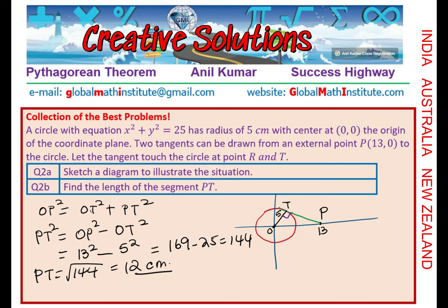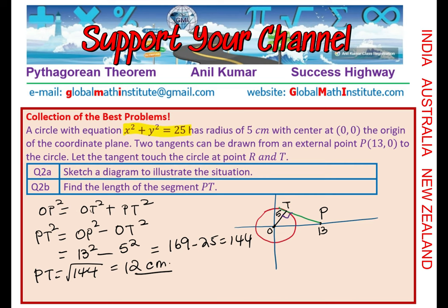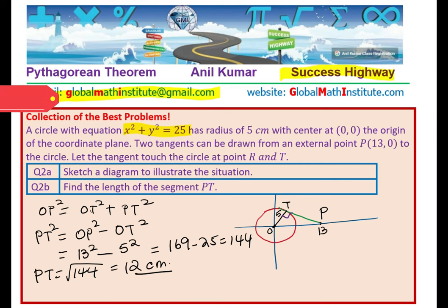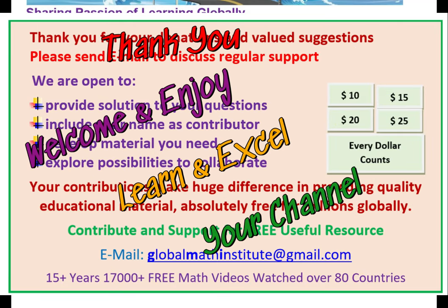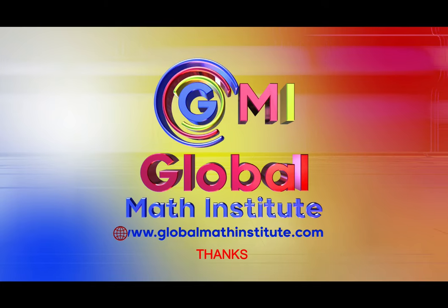If the diagram had been given and well-labeled, this would have been a very simple question. Since it wasn't, we had to visualize and also understand the meaning of the equation x² + y² = 25. In any word problem: first visualize, write down your equations, then solve. I hope this strategy helps. Feel free to comment, share your views, like and subscribe. Send an email to globalmathinstitute@gmail.com to learn directly. Thanks for your time and support.